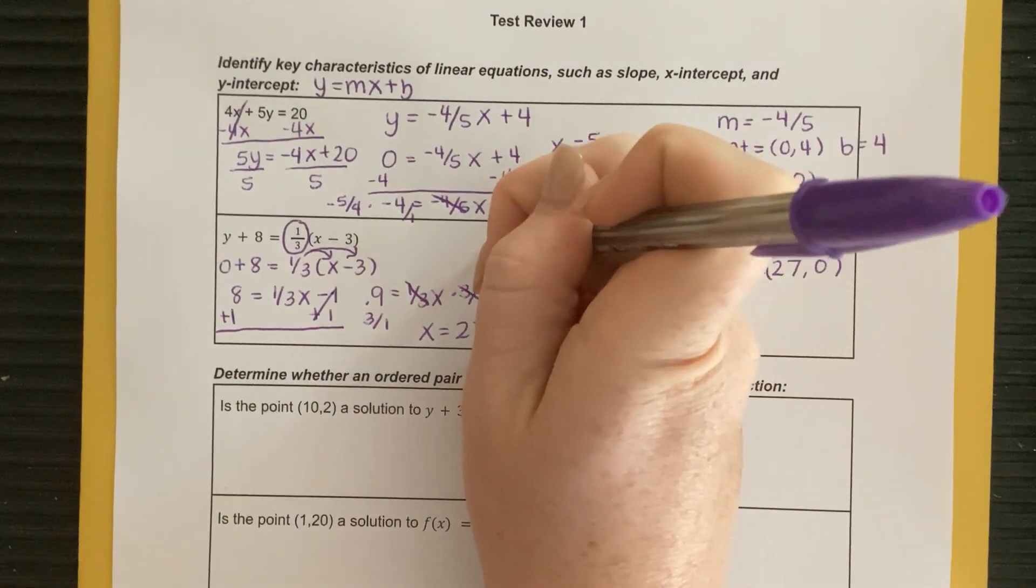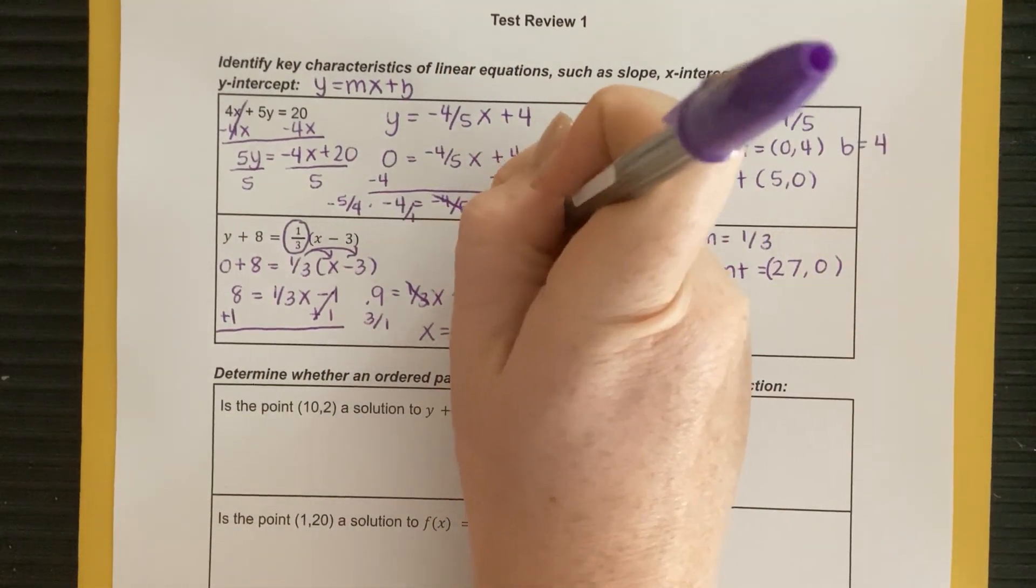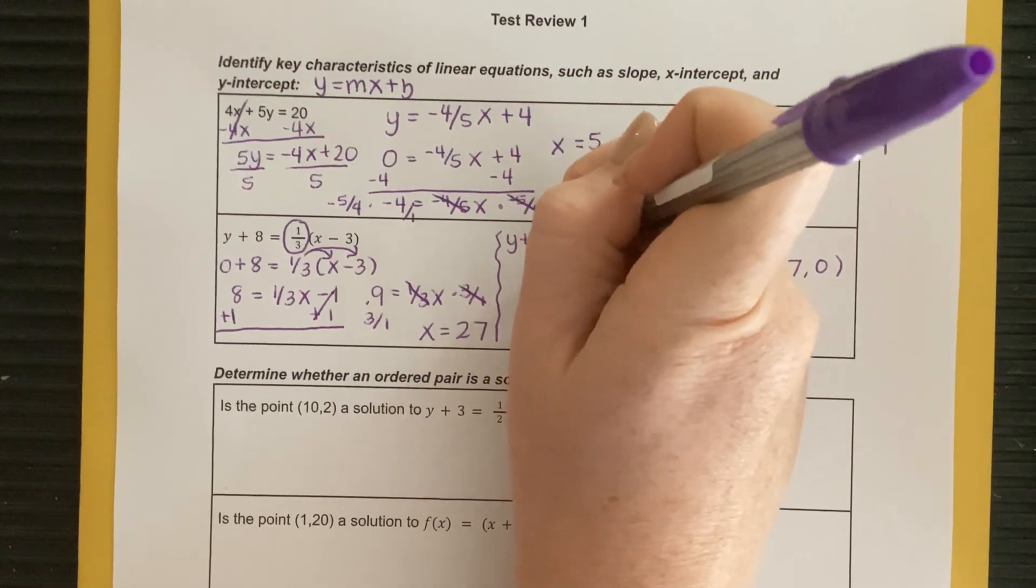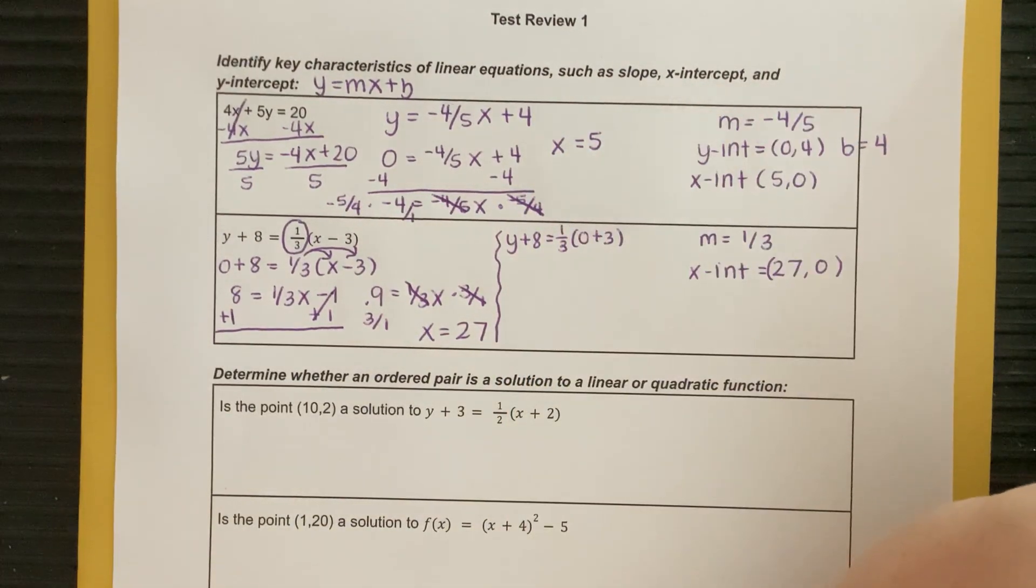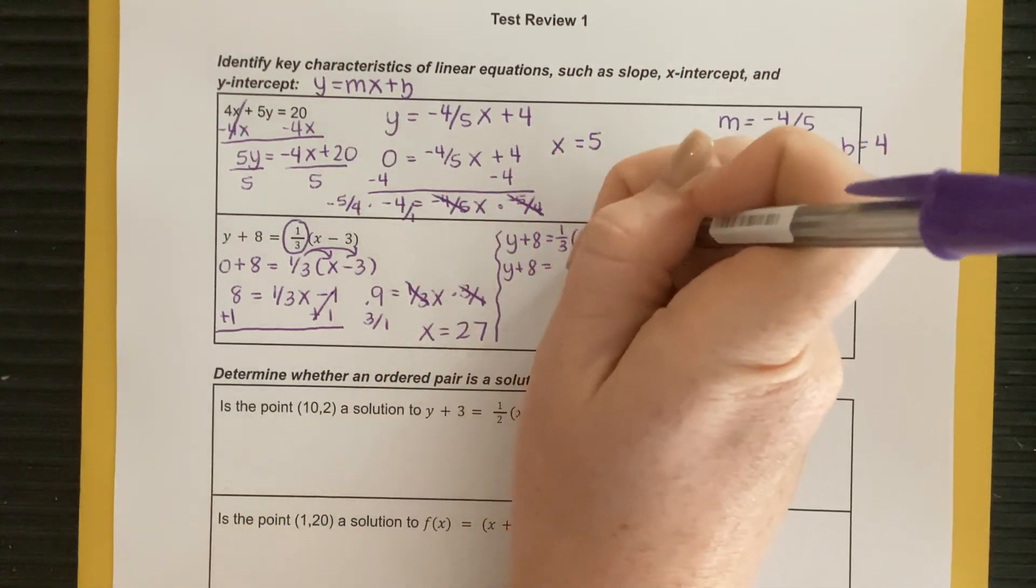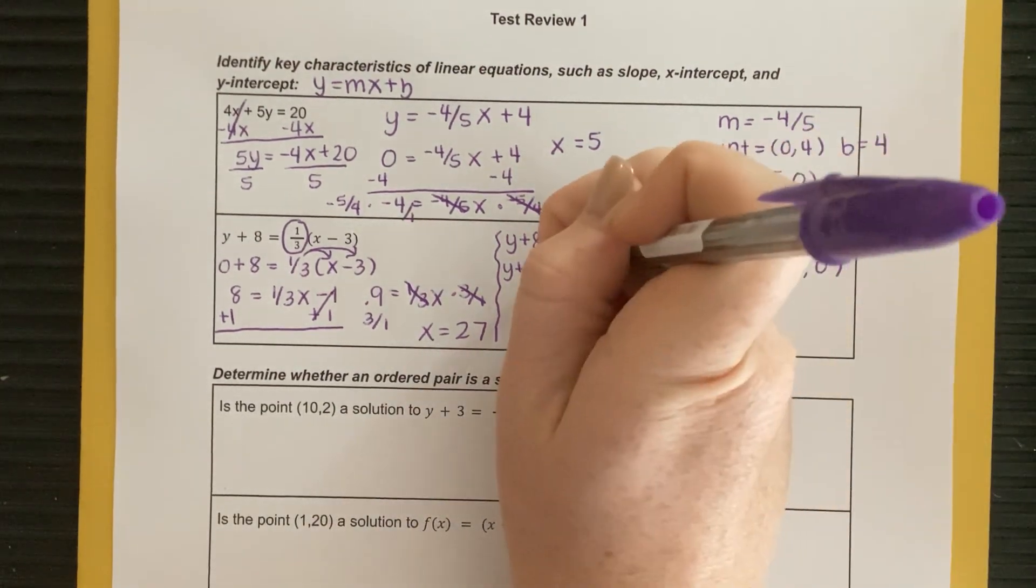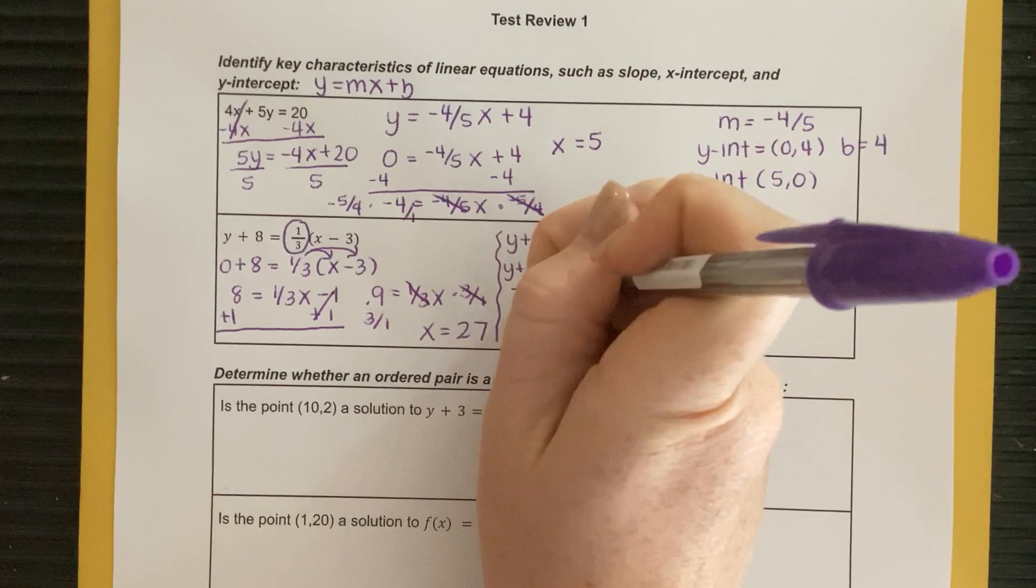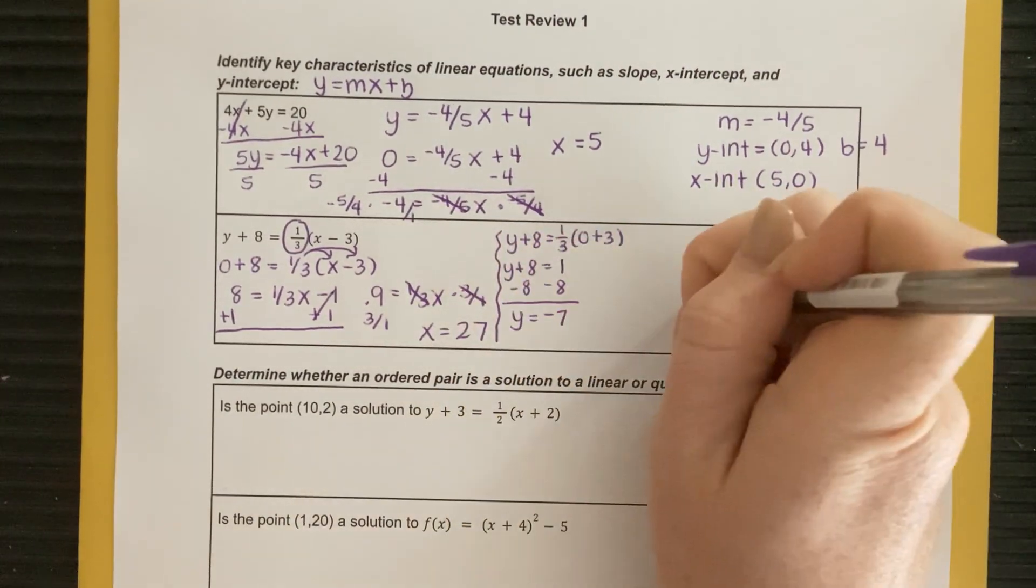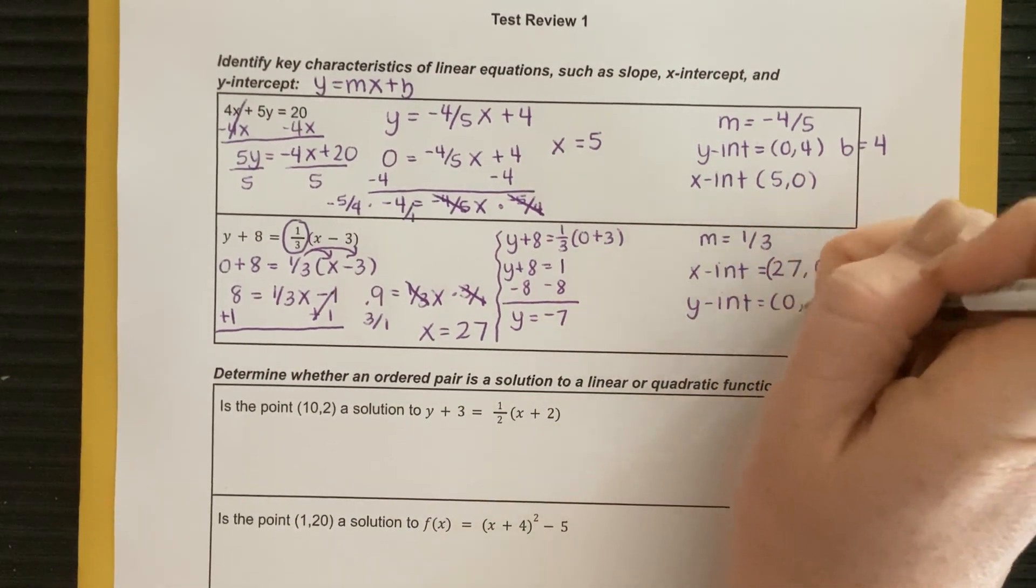And now if I want to define my y-intercept, let me divide my work a little bit. I'm plugging in 0 for x. So I'm going to have y plus 8 is equal to 1 third 0 plus 3. So I'm keeping y plus 8. If I combine these, I'm getting 3. 0 plus 3 is 3. Times a third is just going to give me 1. So then I subtract 8, subtract 8. And that's going to give me y is equal to negative 7. So my y-intercept is equal to 0, negative 7.